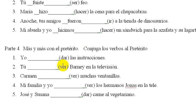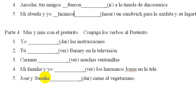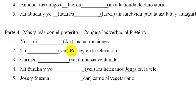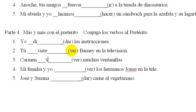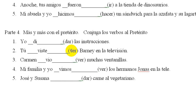Y finalmente, parte de cuatro — lastly, part four — more preterite. The reason I put DAR and VER together is because they're conjugated, with the exception of the first letter — the D and the V — exactly the same in the preterite. If you want to learn those, search YouTube for Señor Belles DAR VER preterite. So, yo di — no accent. Tú viste. Carmen vio. Mi familia y yo vimos. José y Susana vieron. And there are your answers.